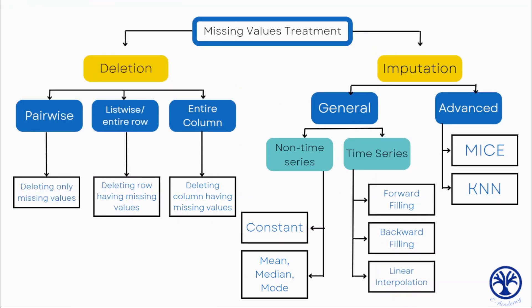Here we are on the overview that we discussed in our first video. The link of the playlist will be in the cards and the description below. Initially we talked about deletion of missing values, and in the last video we covered known time series data with constraint filling and mean, median, and mode imputation. Now our focus is on time series data with three approaches: forward filling, backward filling, and linear interpolation.